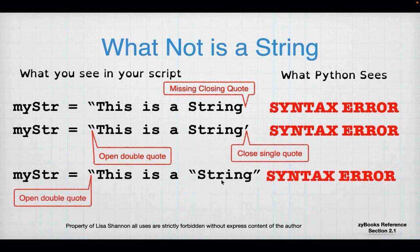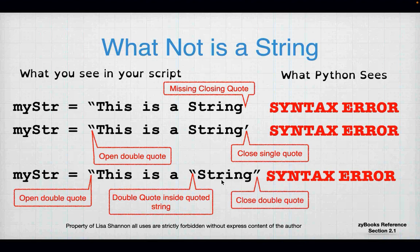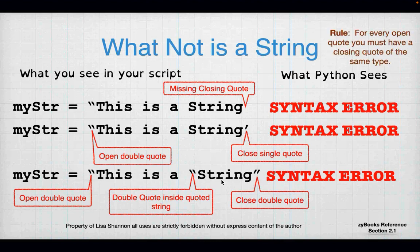Here's another error: three double quotes. You have an open double quote, then after a space another double quote, and at the end a closing double quote. Python is going to assume that mystr equals 'this is a space quote', and then it'll say it doesn't know what to do with the remaining 'string quote'. So for every open quote, you must have a closing quote of the same type.